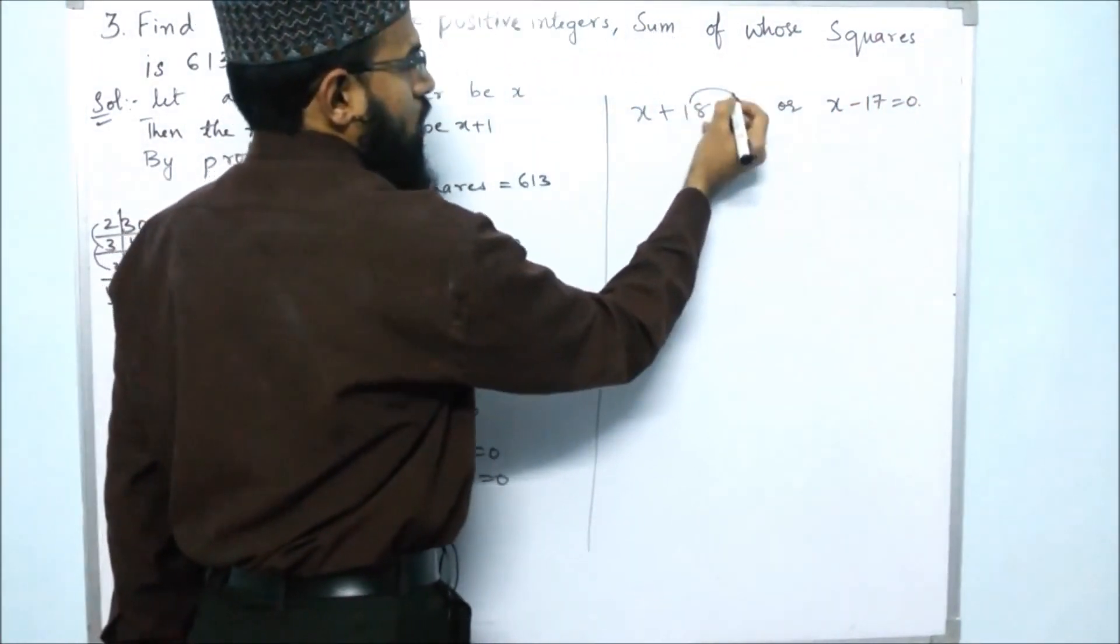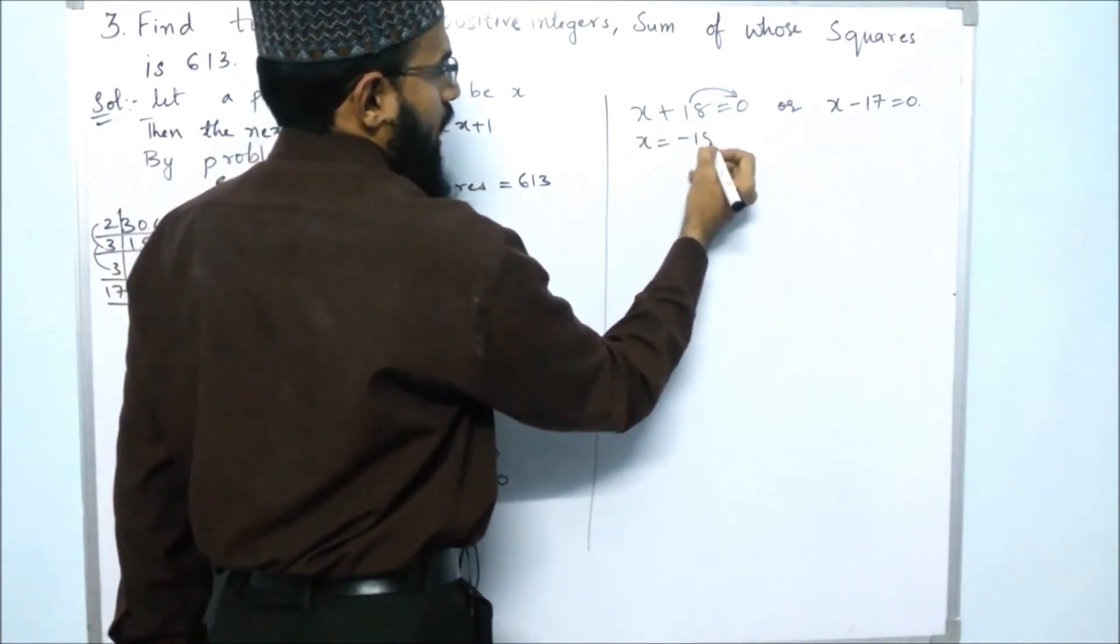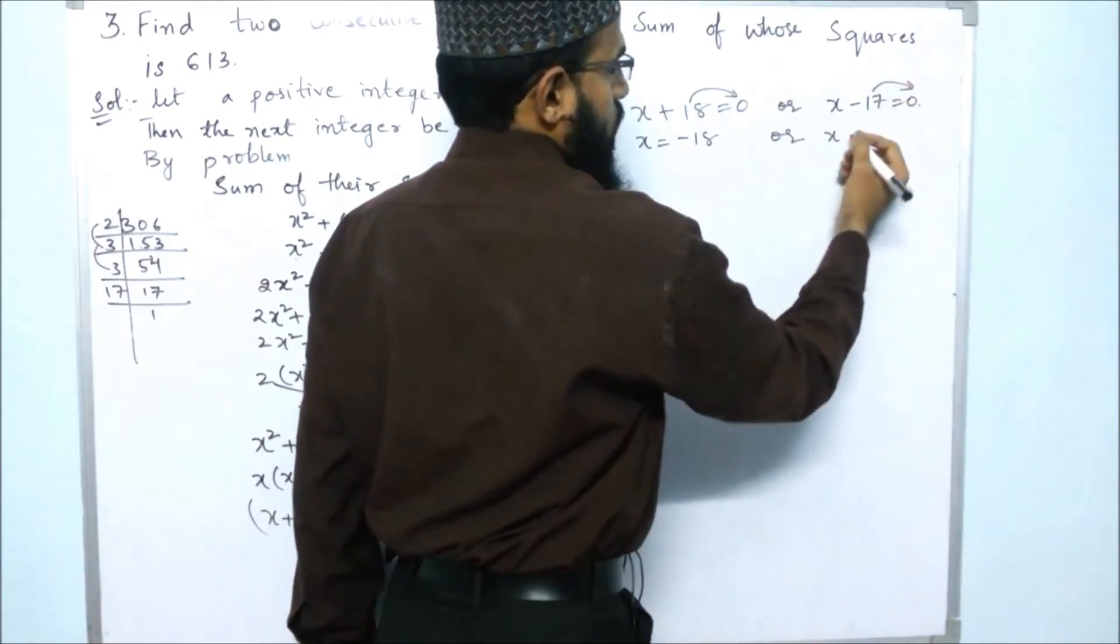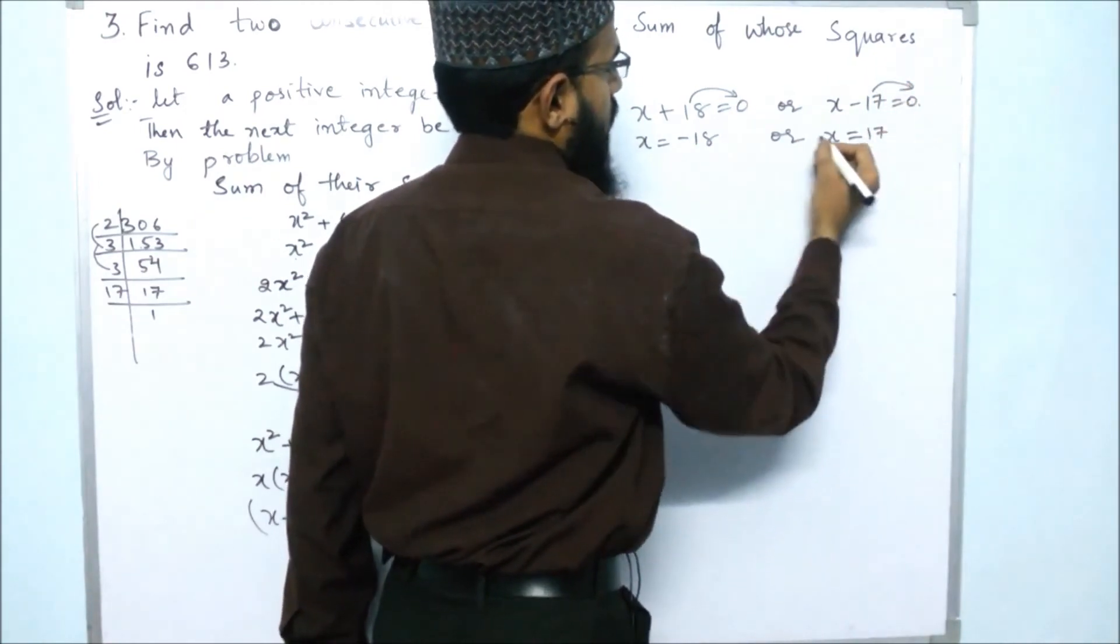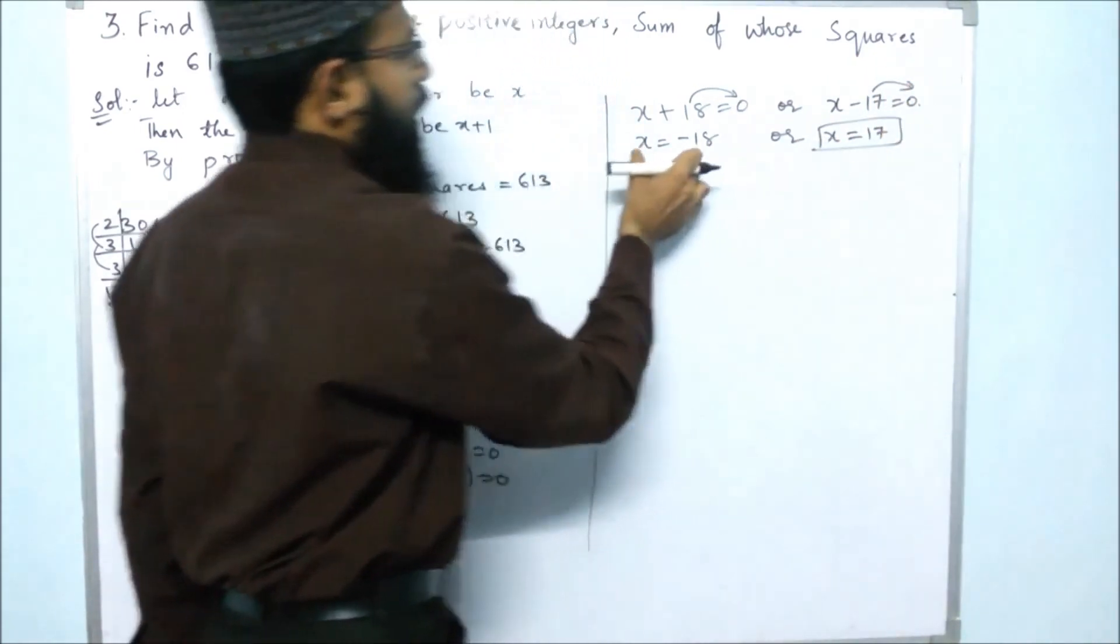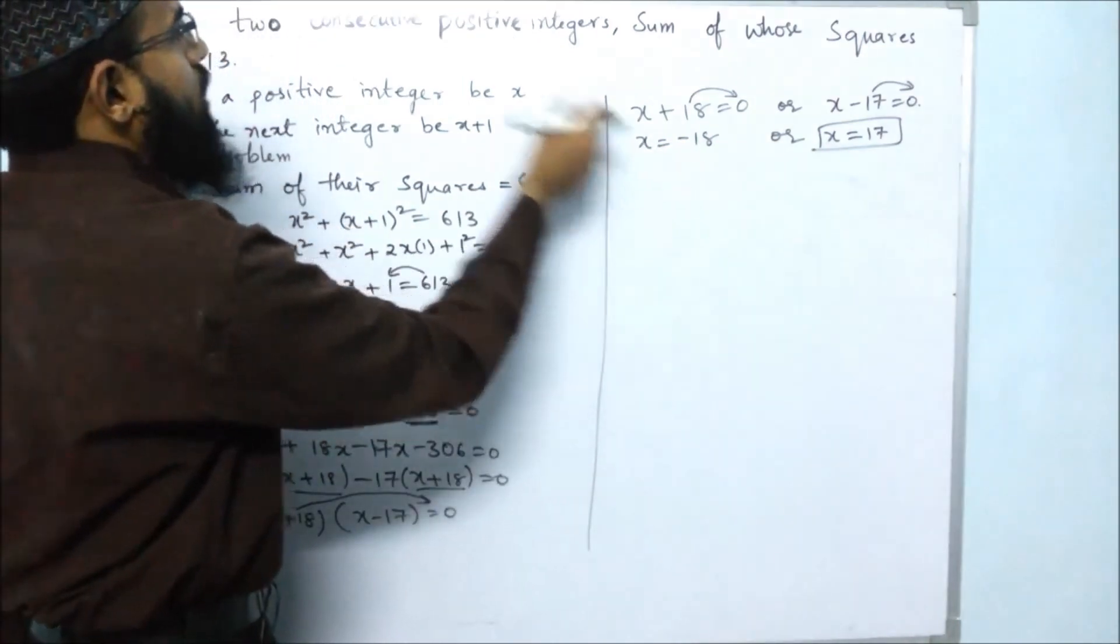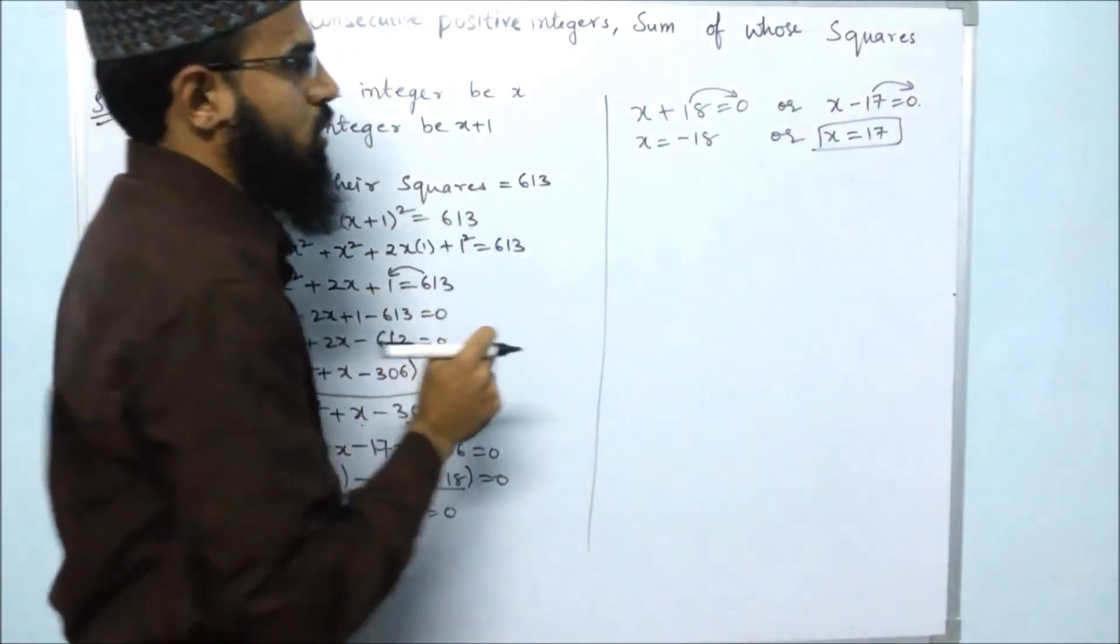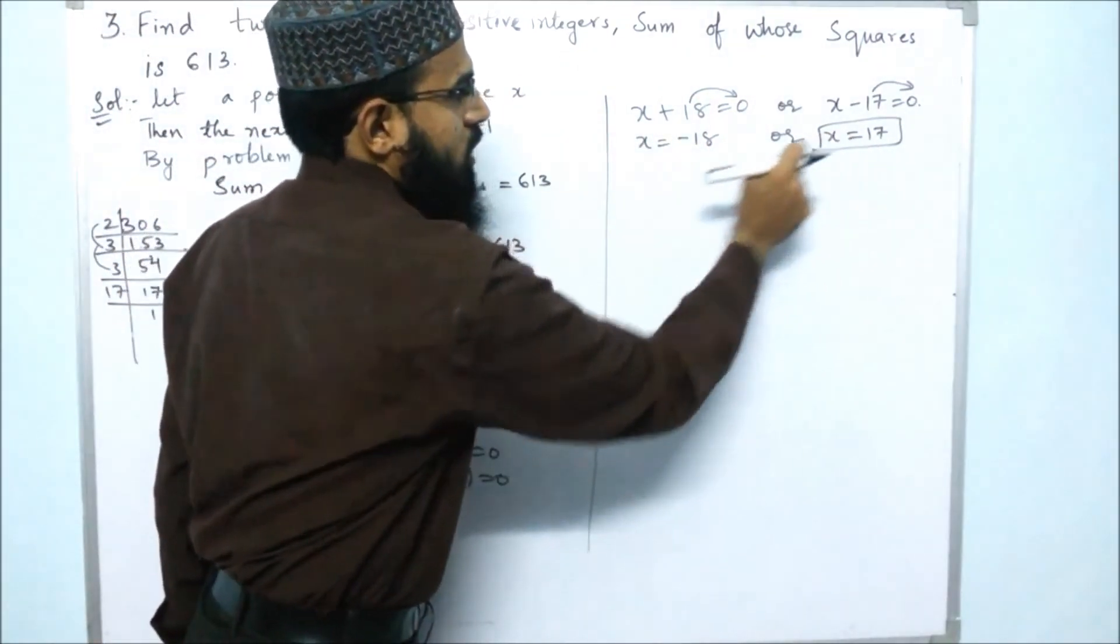Now send this 18 to that side, so it will be x = -18. Or x = 17. Here we have to note that they have asked for positive integers, so we should not take negative values. So we have to take 17.